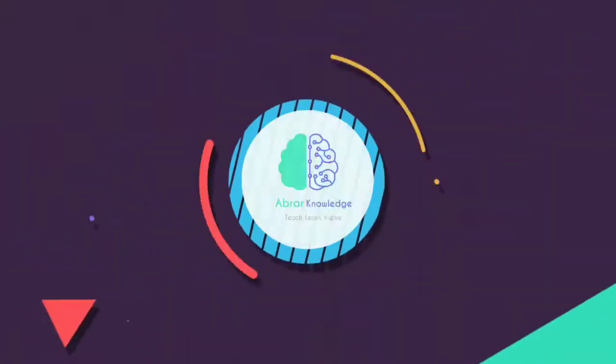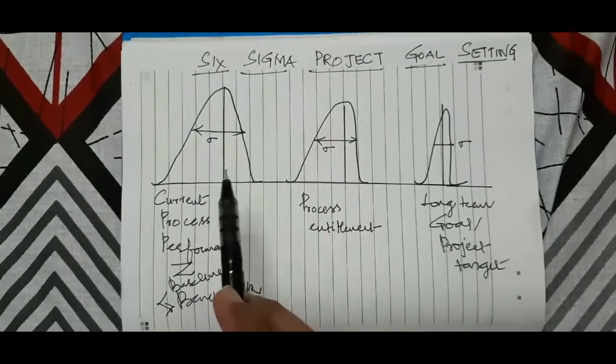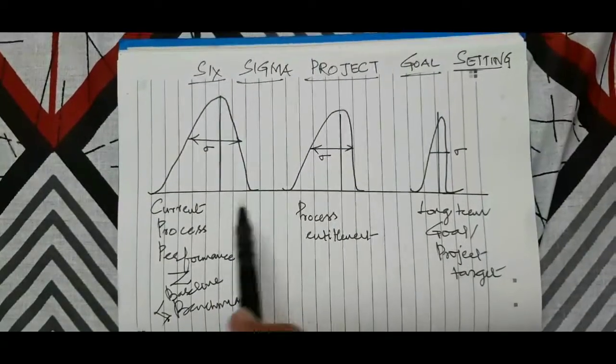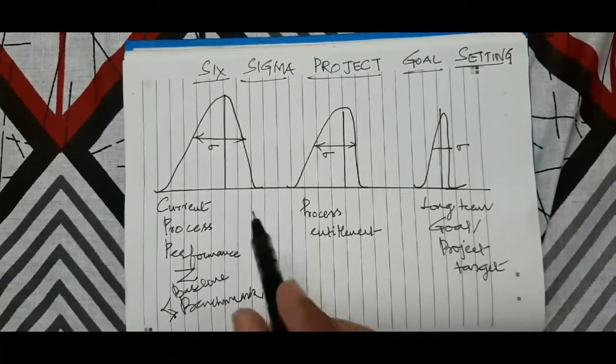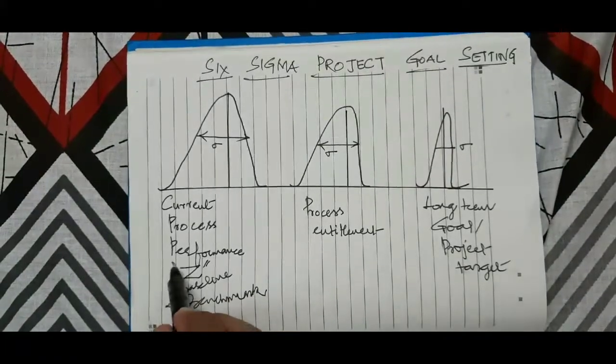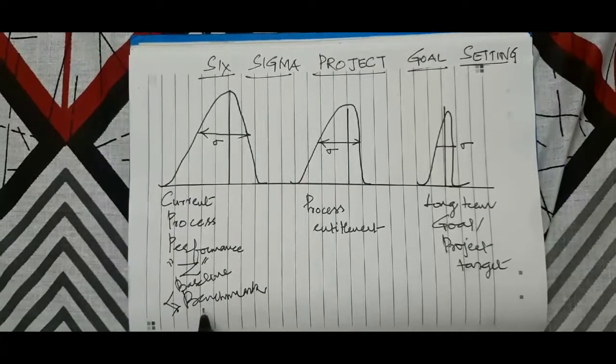I'm going to give you some tips so that you can follow them — please stay tuned till the end. There are three bell curves shown here. The first one is the current process performance, which you can also call Z. That's the baseline, and I'd like to use that as a benchmark.